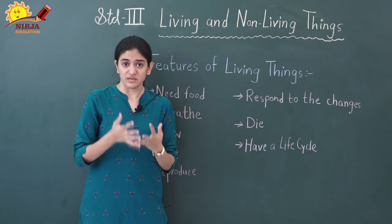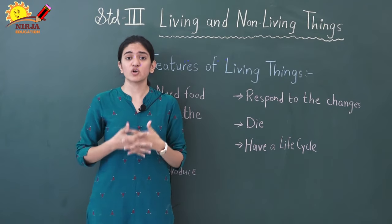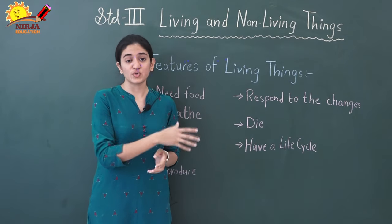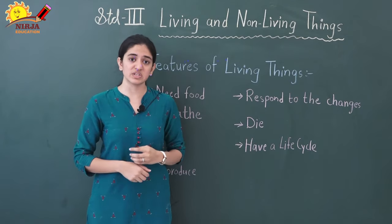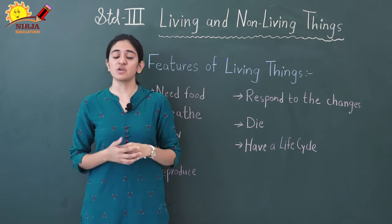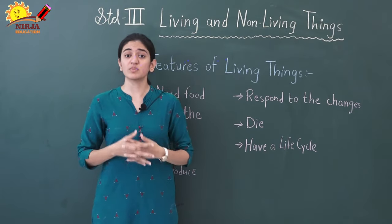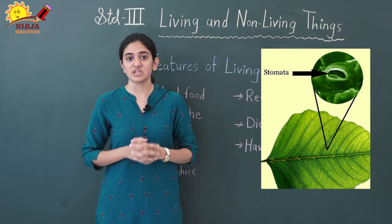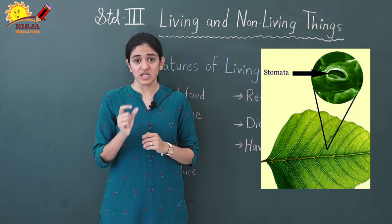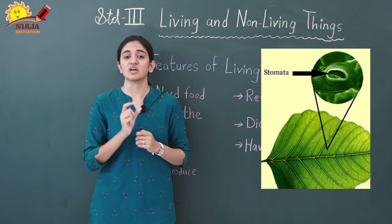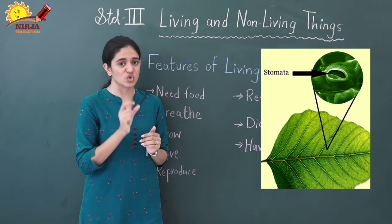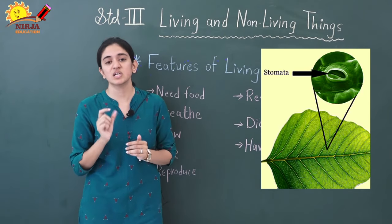Frogs also breathe through their lungs. In water, frogs use their moist skin for breathing, and on land, frogs use their lungs for breathing. Plants also breathe — there is a special structure known as stomata in plants, present in the leaves, through which the plants breathe.